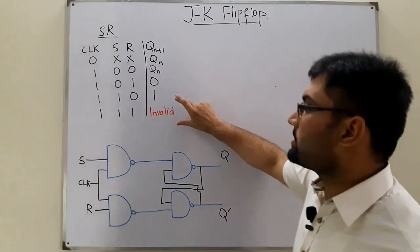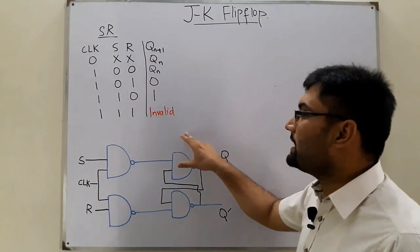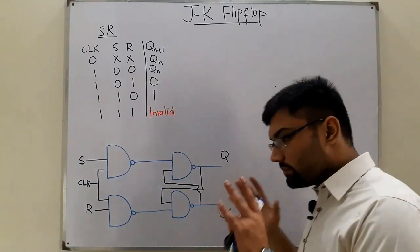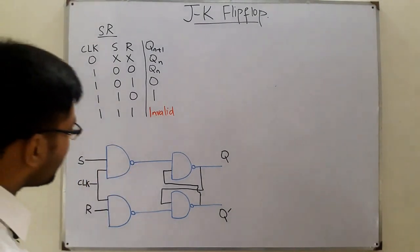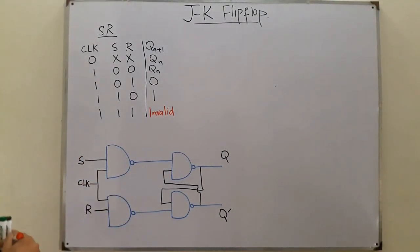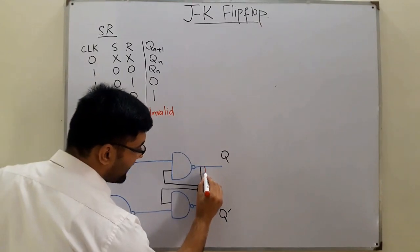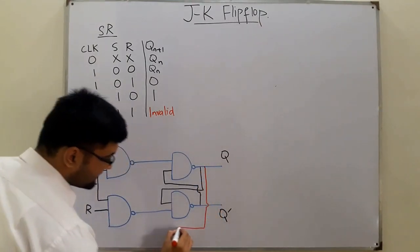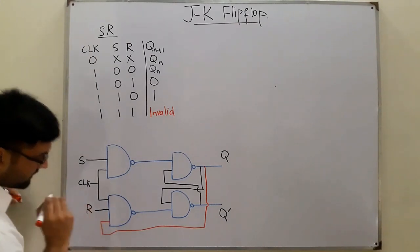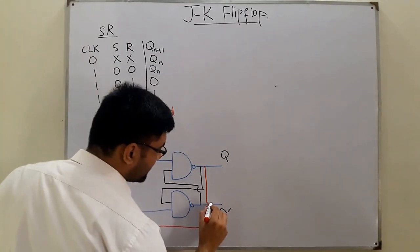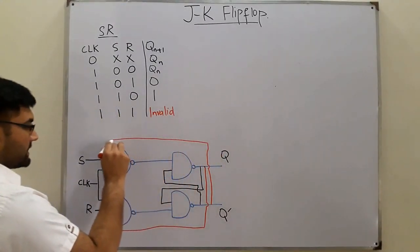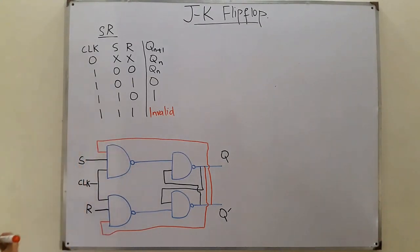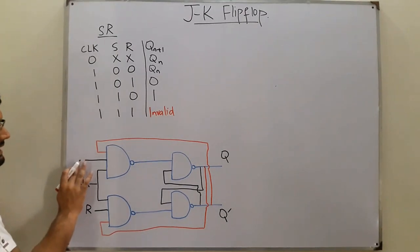In the JK flip-flop, Q-n-plus-one is no longer invalid when both inputs are one. To achieve this, we add a feedback: the Q output is fed back to one gate, and Q-complement is fed back to the first gate. We have introduced a new feedback mechanism.